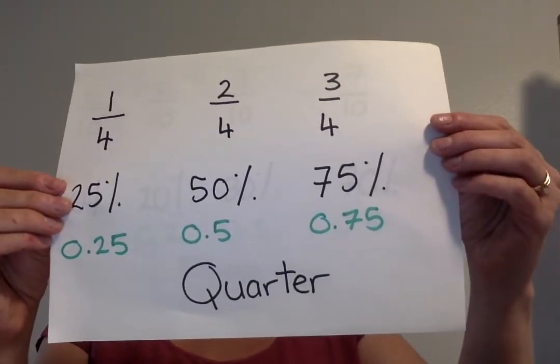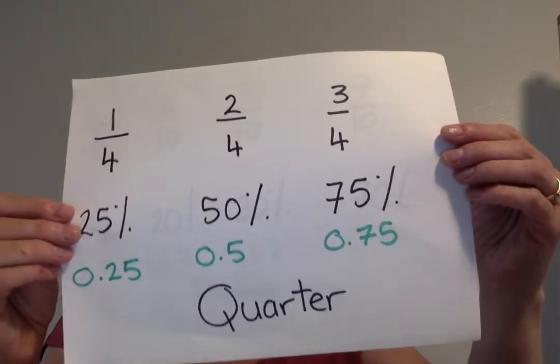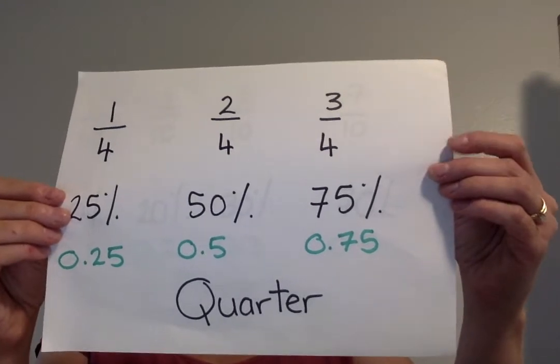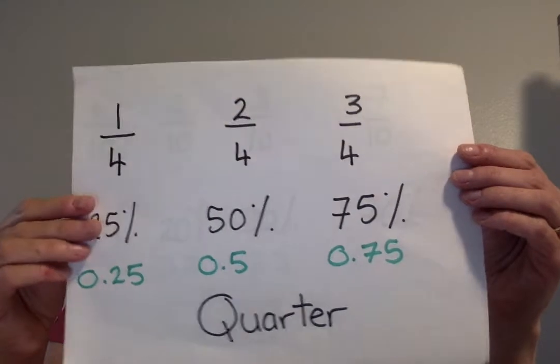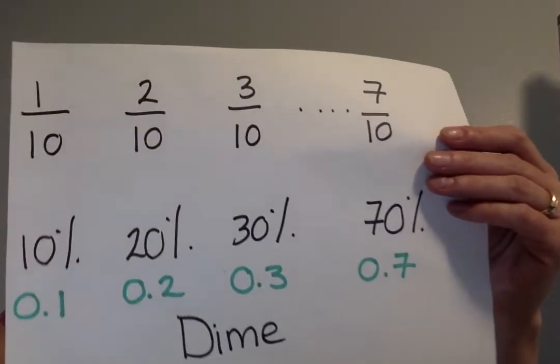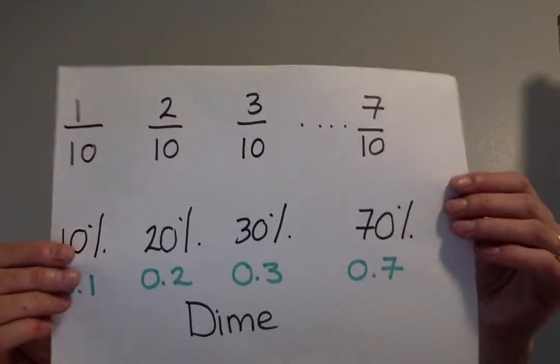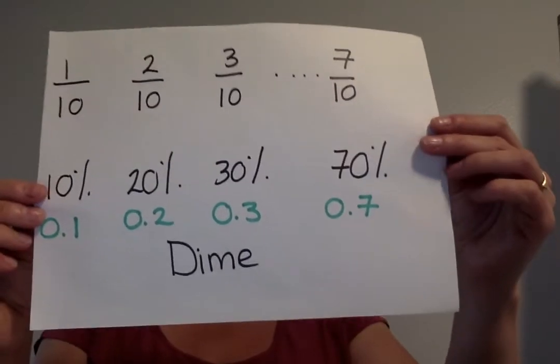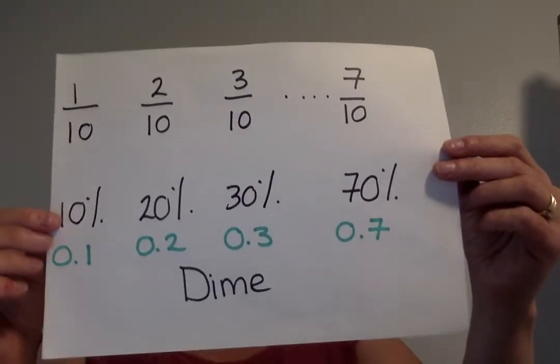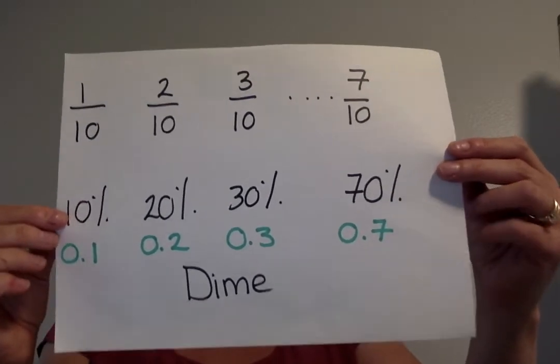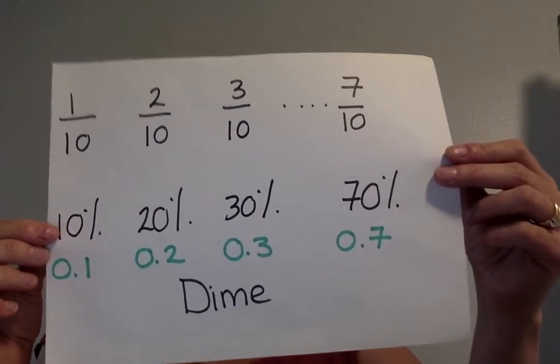Three quarters, 0.75 or 75 percent. We also have in America a dime. A dime is counting by tens to 100, so one tenth is 0.1 as a decimal, 10%. Two tenths would be 0.2, 20 percent.